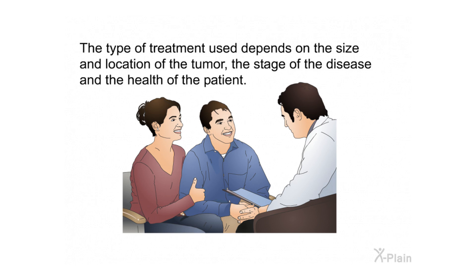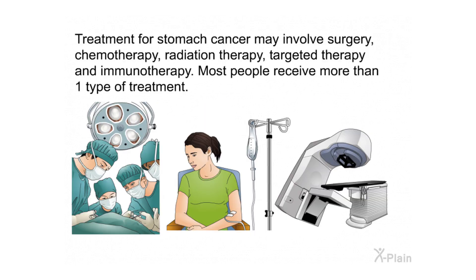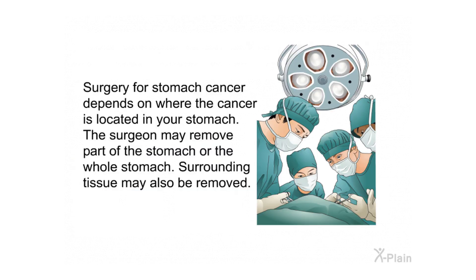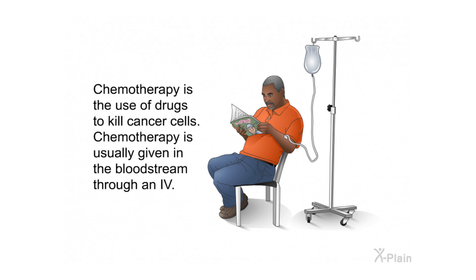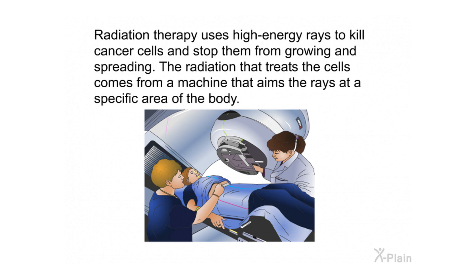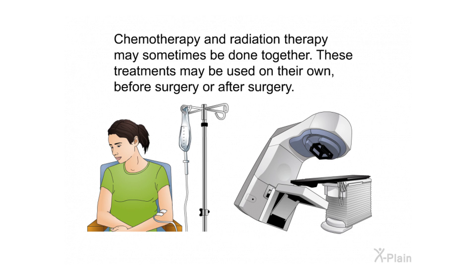The type of treatment used depends on the size and location of the tumor, the stage of the disease, and the health of the patient. Treatment for stomach cancer may involve surgery, chemotherapy, radiation therapy, targeted therapy, and immunotherapy; most people receive more than one type. Surgery may remove part or all of the stomach along with surrounding tissue. Chemotherapy uses drugs to kill cancer cells, usually given through an IV. Radiation therapy uses high-energy rays to kill cancer cells, aimed at a specific area by a machine. Chemotherapy and radiation therapy may sometimes be combined, and may be used before or after surgery.